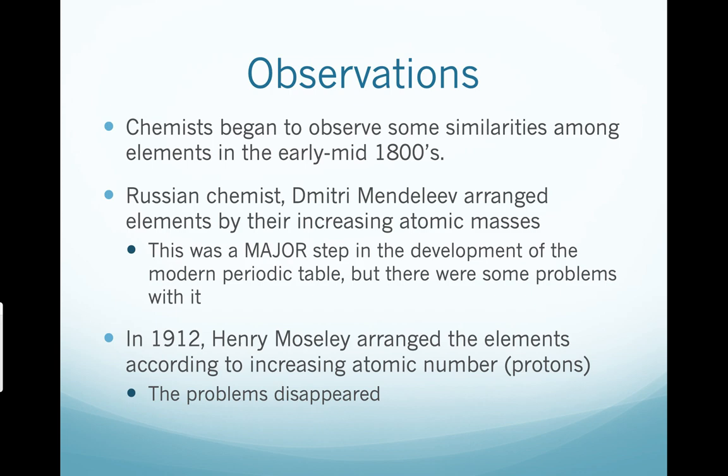And so this was a huge step in terms of organizing the periodic table. But the problems with it were some elements had more neutrons than others, therefore they might have a heavier mass. And so there were all these problems that arose.